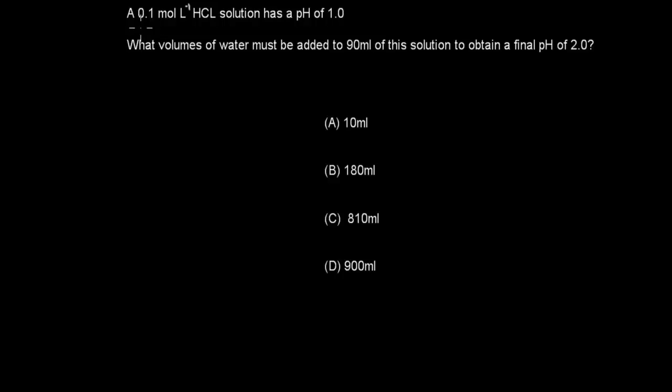Next question: A 0.1 mol/L solution of hydrochloric acid has a pH of 1.0. What volume of water must be added to 90 mL of the solution to obtain a final pH of 2.0? A) 10 mL, B) 100 mL, C) 810 mL, D) 900 mL. Pause the video and attempt the question.